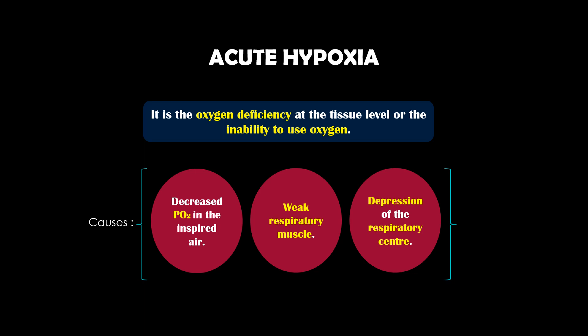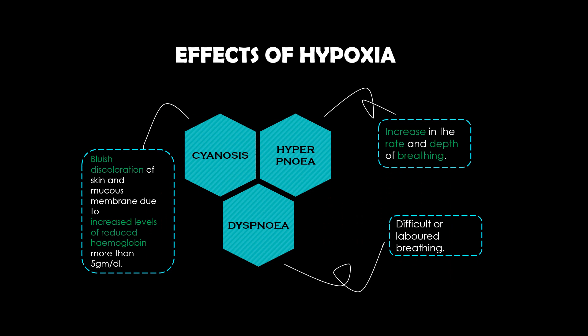Hypoxia is the oxygen deficiency at the tissue level or the inability to use oxygen. Hypoxia causes pulmonary arterioles to constrict, which is much greater in some parts of the lungs. One type of hypoxia is hypoxic hypoxia, which is a problem for normal individuals at high altitude. At 10,000 feet above sea level, the partial pressure of oxygen is about 60 mmHg. The causes of hypoxic hypoxia include decreased partial pressure of oxygen in the air, weak respiratory muscles, depression of the respiratory center, and ventilation-perfusion imbalance. There are many effects of hypoxia; one of them is cyanosis, which occurs when reduced hemoglobin is more than 5 g/dL, causing a bluish discoloration of skin and mucous membranes.